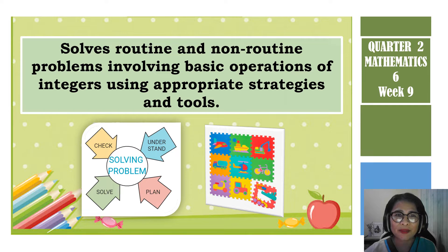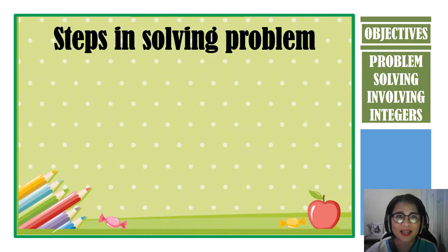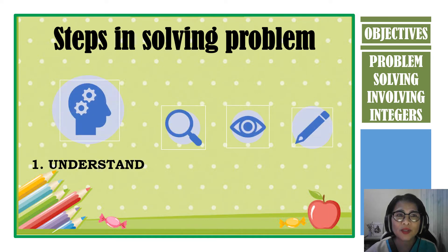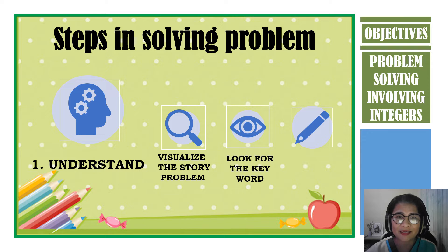Let us now talk about the basic steps on how to solve word problems. First step is to understand the problem. What will you do to understand the problem? First is to visualize the problem by knowing the basic information, events, and the question asked in the problem. Then look for the keyword or the pattern or even draw a model for better understanding.